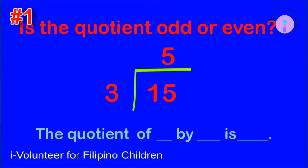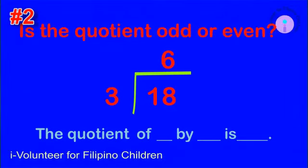Kindly repeat. Item number two: is the quotient odd or even? The quotient of eighteen by three is even.